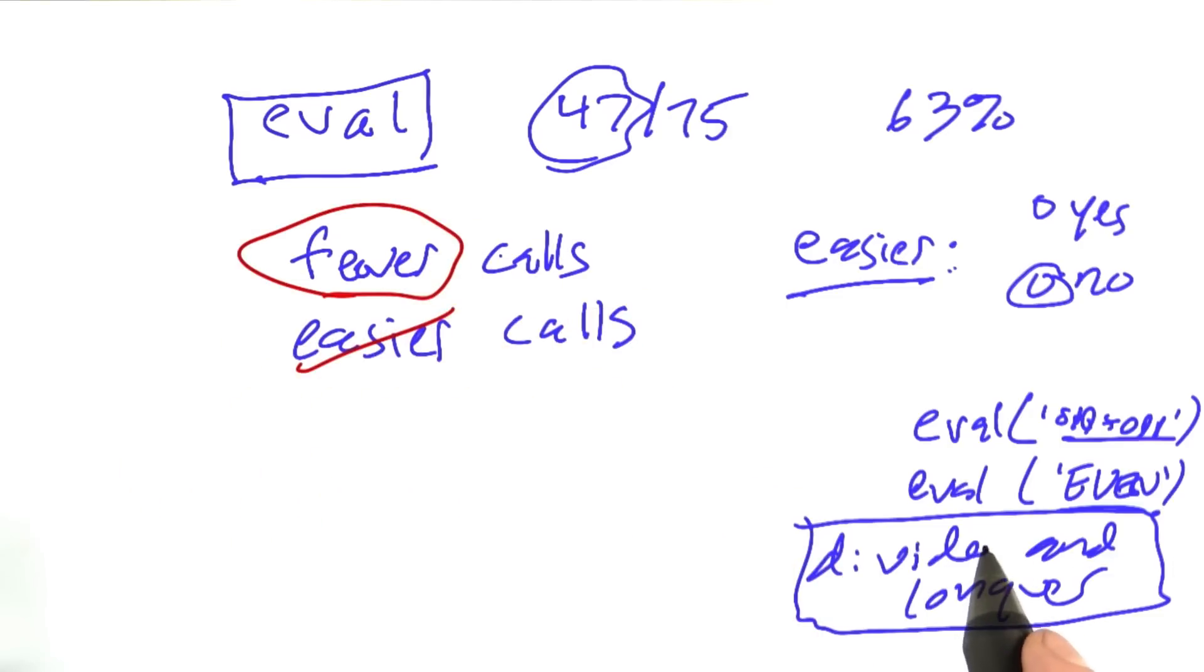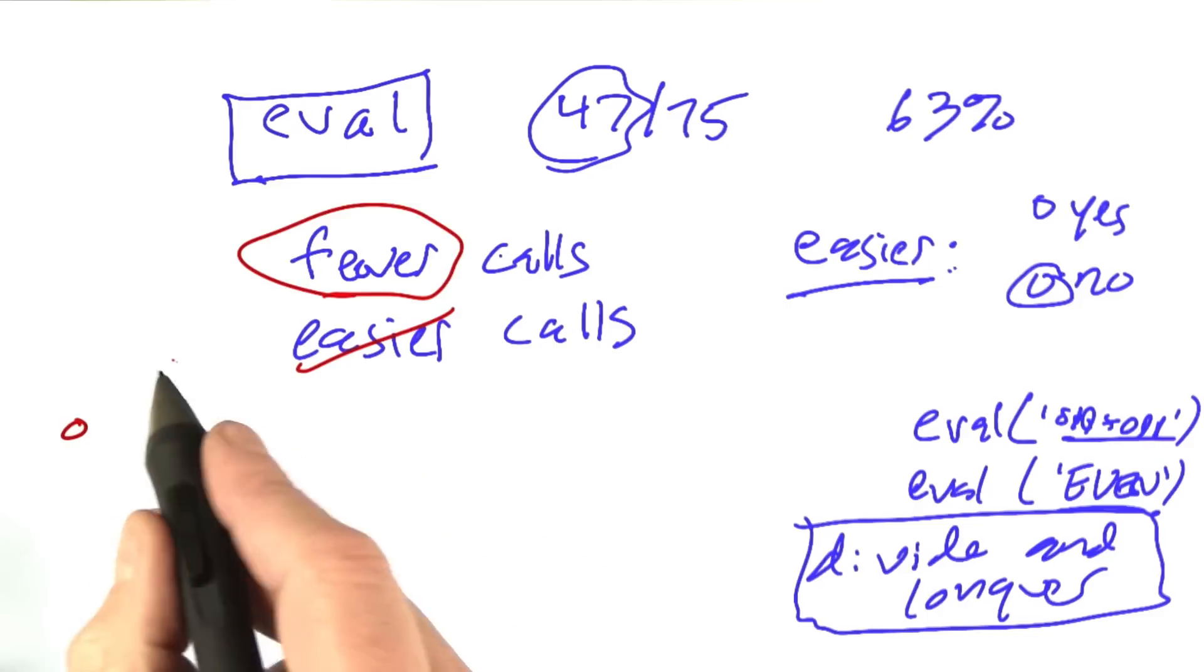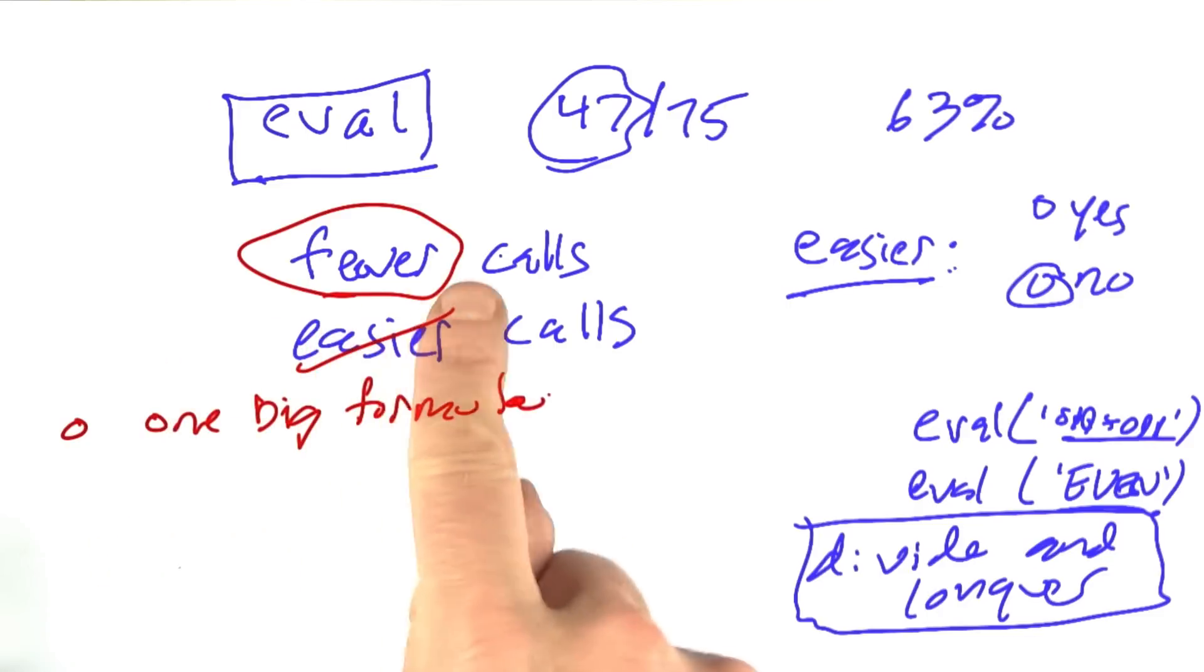So let me write down some possibilities for fewer calls and see which ones you think make sense. One possibility would be for each equation, like odd plus odd equals even, rather than evaluating them all n factorial times, maybe we could combine all of those into one big equation. Certainly that would result in fewer calls if we could figure out a way to do that and still get the right answer.